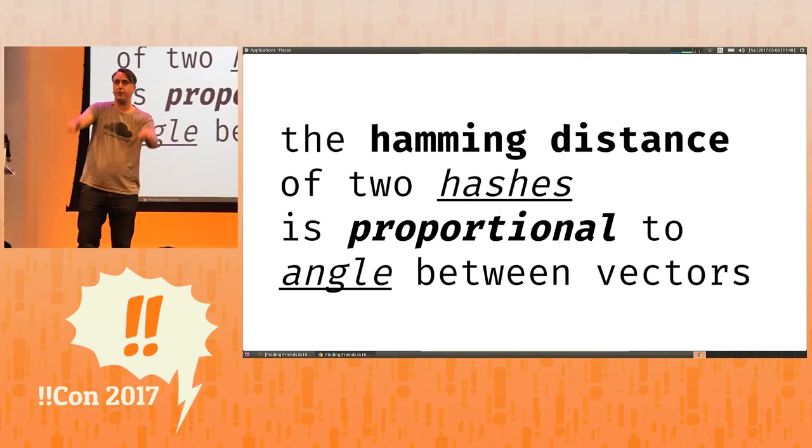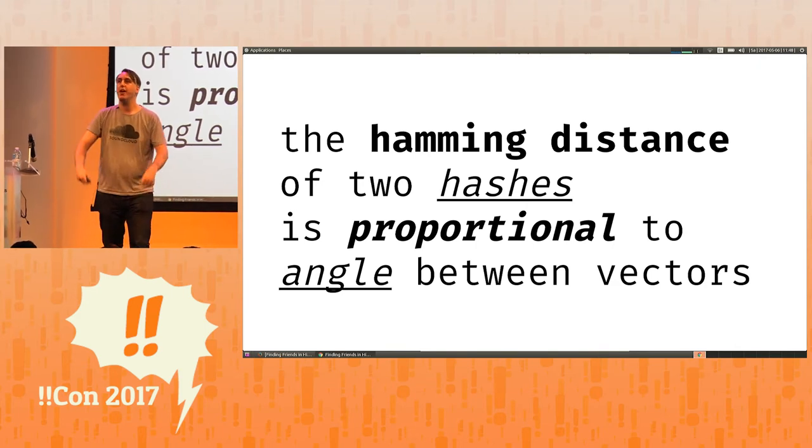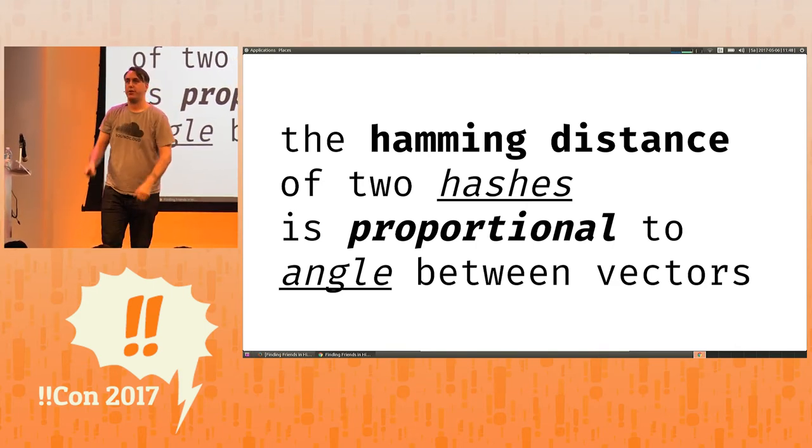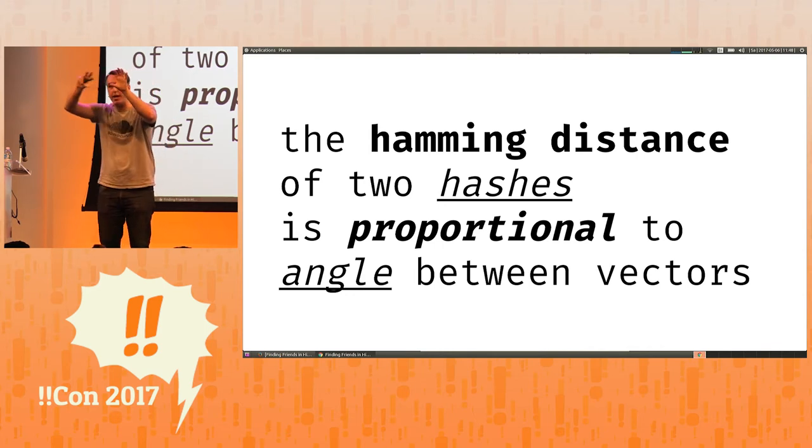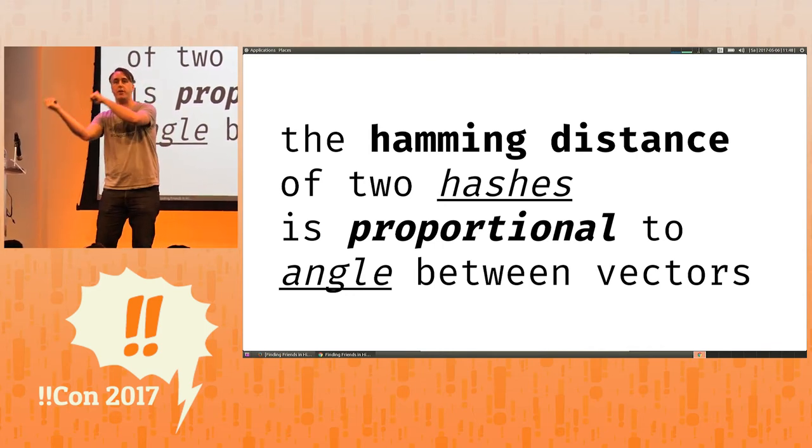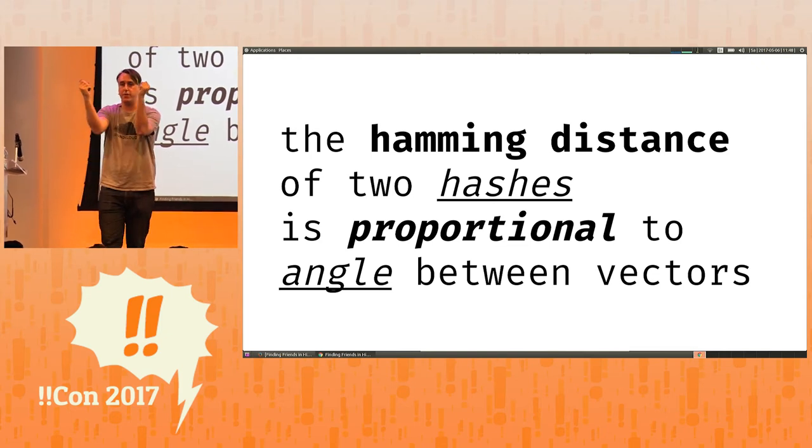And the likelihood of you doing this is proportional to the angle between them. Another complex way of saying this is that the Hamming distance, which is the number of bits that are different divided by their length, is proportional to the angle between the vectors. So that's what we mean when we say they preserve locality. Somehow, this binary representation preserves the fact that they were one side or the other on the line, and this is related to the angle.